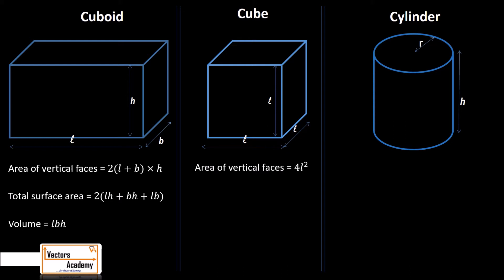For a cube, the area of the vertical faces is 4L², where L is the length of any side. Remember, all the sides of a cube have the same length. The total surface area is 6L² and the volume is L³.